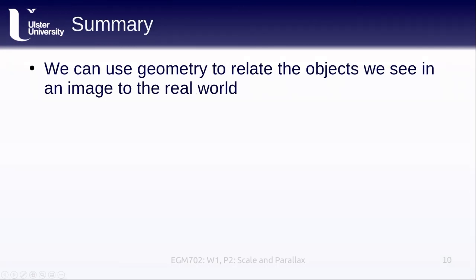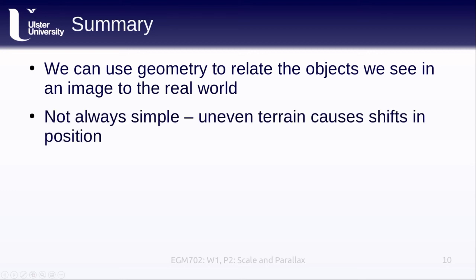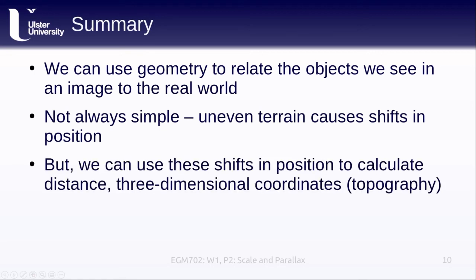To sum up: we can use geometry to relate objects seen in an image to the real world, either by directly measuring ground distances or by knowing the camera parameters and flying height. Uneven terrain causes positional shifts that can be problematic, but we can also use those shifts to calculate the three-dimensional coordinates or topography of objects seen in the image.